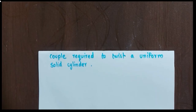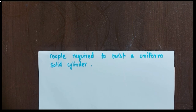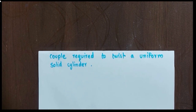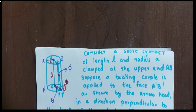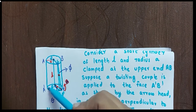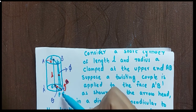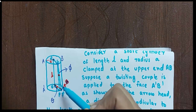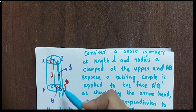Today we are going to derive the couple required to twist a uniform solid cylinder — we are going to find the value of the couple needed. For that, we will consider a solid cylinder clamped at the upper side with the lower side free. We will attach a weight and apply a twisting couple, as a result the lower side will start rotating through a particular angle. The twisting couple is applied in one direction and a restoring couple stored inside acts equally, trying to bring the cylinder back to its original position.